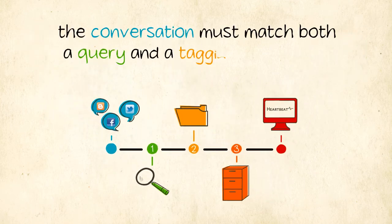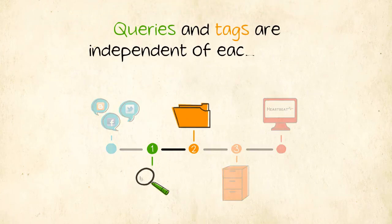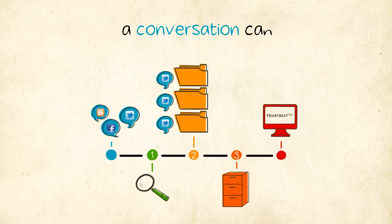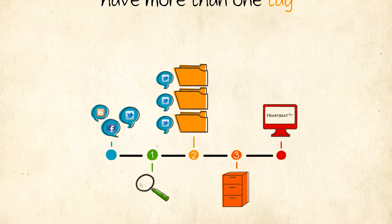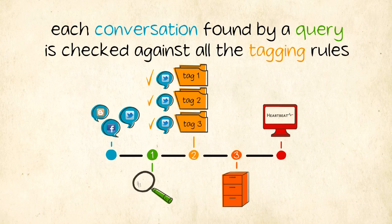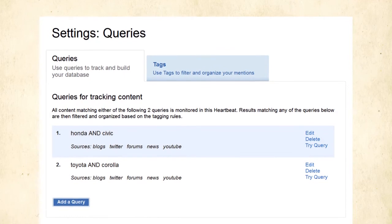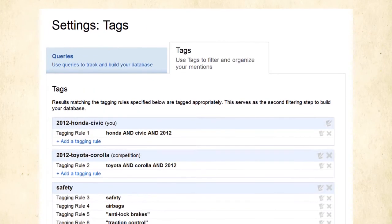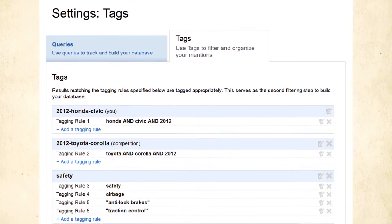Remember, the conversation must match both a query and a tagging rule before it is stored in the database for analysis. Queries and tags are independent of each other, and a conversation can have more than one tag. Remember, each conversation found by a query is checked against all the tagging rules. Using queries to find the conversations you want, and tags to organize and store them, is vital to ensuring that you maximize Heartbeat's potential.